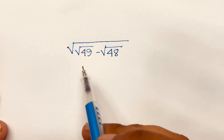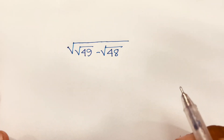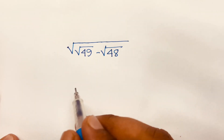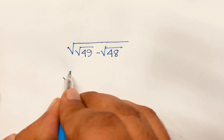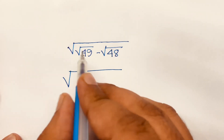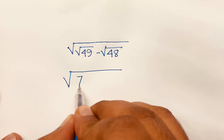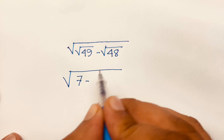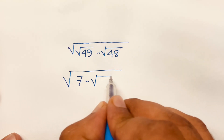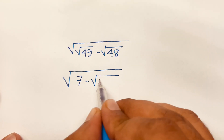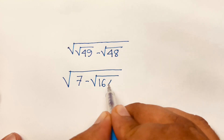How to solve square root of (√49 minus √48). First, √49 equals 7, minus √48, which equals √(16 times 3).